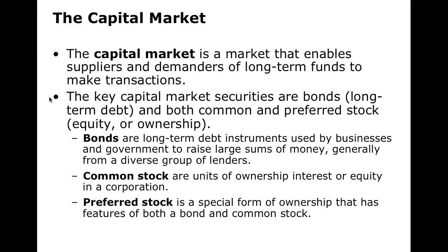Common stock are units of ownership inside of a company. If you buy shares of stock, you get a small piece of ownership and hopefully the stock price goes up and you make capital returns. Preferred stock is a hybrid between bonds and stock — it's like a bond in that you get a guaranteed dividend, but it's also like a stock because it's a form of ownership. The key difference between preferred stock and a bond is that preferred stock never expires, whereas bonds do expire.